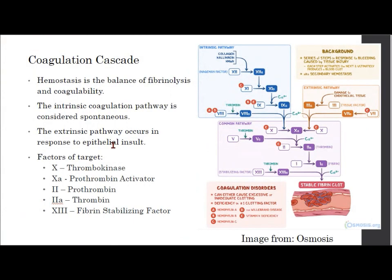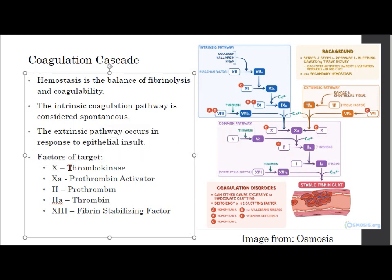The coagulation cascade looks at hemostasis — the balance of fibrinolysis and coagulability. The intrinsic coagulation pathway is considered spontaneous and is always happening, whereas the extrinsic pathway occurs in response to epithelial insults. The factors targeted by pharmaceuticals are factor X (thrombokinase), factor Xa (activated factor X, the prothrombin activator), factor II (prothrombin / thrombin), and factor XIII (the fibrin stabilizing factor). There's a nice image from Osmosis if you want to visualize how we get from the insult or the intrinsic pathway down to a fibrin clot.